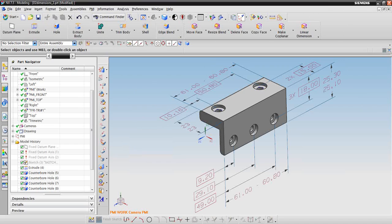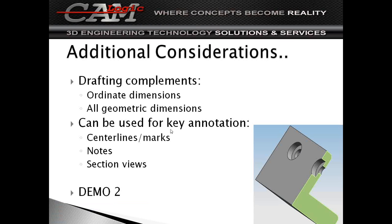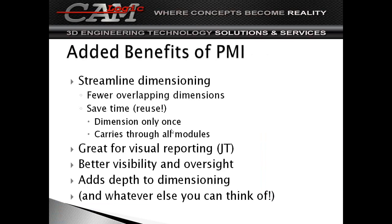A benefit to PMI: you can streamline your dimensioning so you don't have as many overlapping. You dimension it in modeling, then you dimension it in drafting — maybe you don't have the same dimension, maybe you picked the wrong point. And it saves you time, because you can reuse these same dimensions without having to recreate them. One dimension carries all the way through into — maybe you're going to do CAM in the end. You want the same dimensions to line up. Again, you can use it for JT reports. Visibility adds depth to your dimensions.